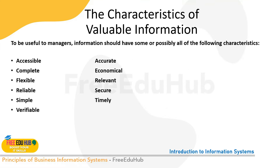To be useful, we need to look at the characteristics of valuable information. Managers' information should have some or all of the following characteristics. First, information must be accessible — easily accessible to authorized users so they can obtain it in the right format at the right time. It should be accurate, meaning it should not have any errors, since inaccurate data fed into the transformation process leads to inaccurate information.